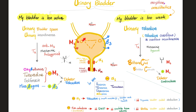The detrusor muscle is supplied by sympathetic and parasympathetic nerves. The parasympathetic — rest, digest, and go to the bathroom — wants you to empty the bladder. The M3 receptor, if stimulated by acetylcholine, tells the bladder to empty. But if the bladder is too active, we inhibit the M3 with drugs such as oxybutynin, tolterodine, or solifenacin.